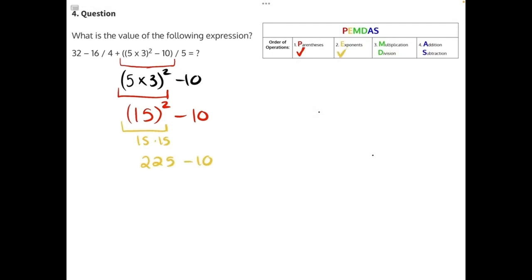There is no multiplication or division, so we can go to addition and subtraction, in this case subtraction. 225 minus 10 will give us 215.